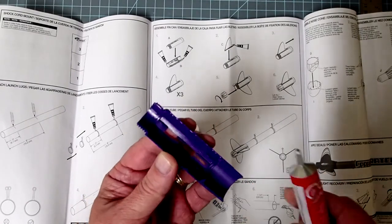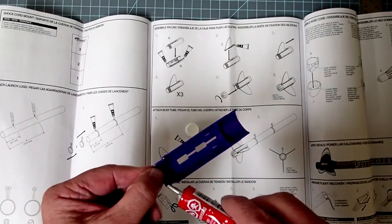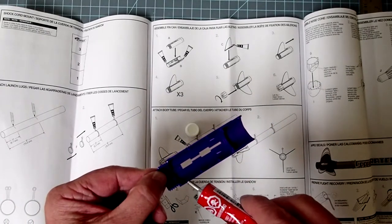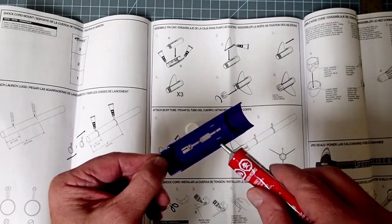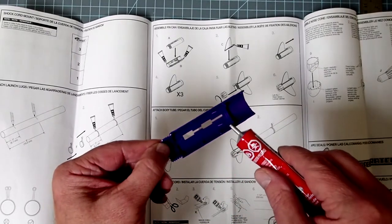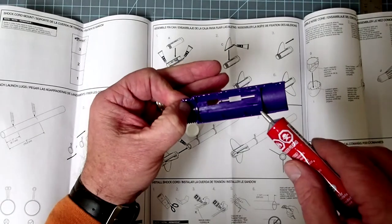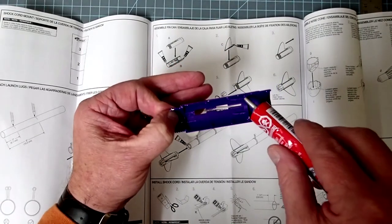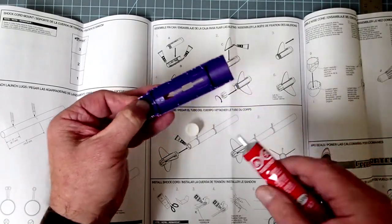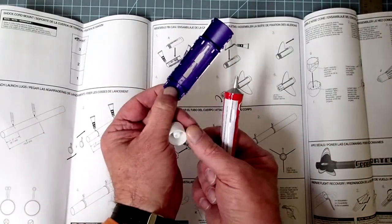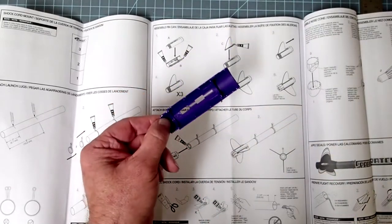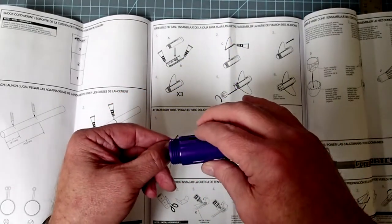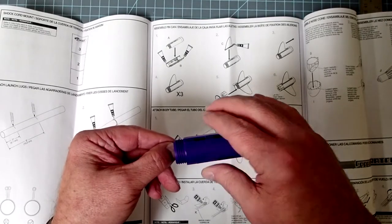And you don't want to get this too thick because we don't want the glue to be squeezing out all over the place. And I'm going to hit each one of those pegs. Okay. And I'll get a little more there. All right, and now I'm just going to put this together. Like so.